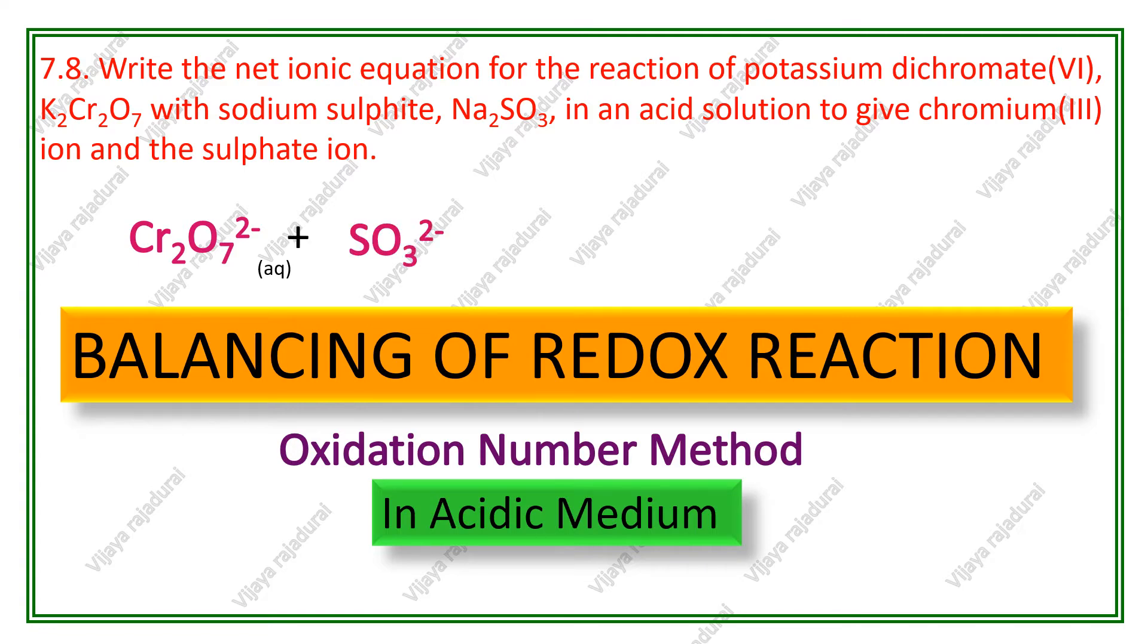So, Cr2O7 2- plus SO3 2- gives Cr 3+ and SO4 2-.